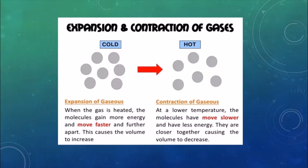Expansion and contraction of gases also takes place when we heat a gas. The volume of the gas increases on heating — this is called expansion. When the gas is cold, the particles are close to each other, but when you heat the gas the particles move away from each other, increasing the volume. When the gas cools down it contracts, the volume decreases, and the particles come close to each other again.